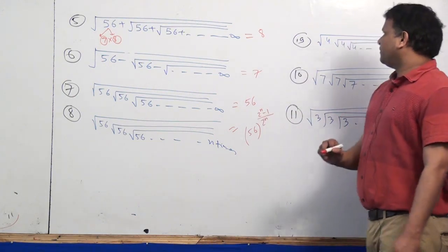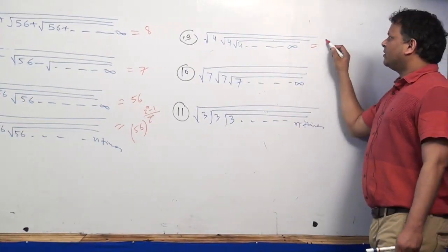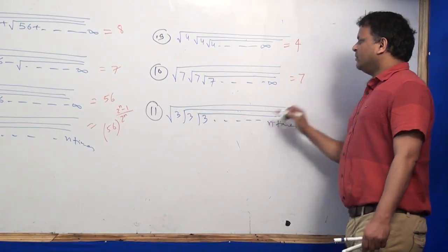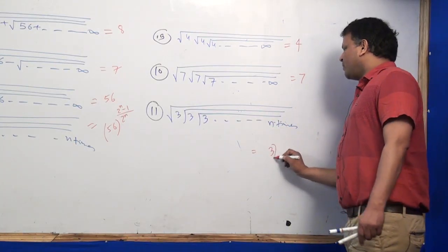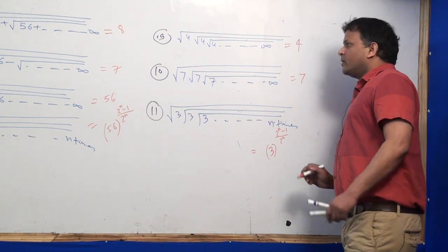How do I do this? Multiplication into infinity, answer is 4. Multiplication into infinity, answer is 7. Multiplication is n times, answer is 3 to the power n minus 1 divided by 2 to the power n.